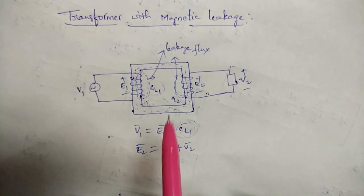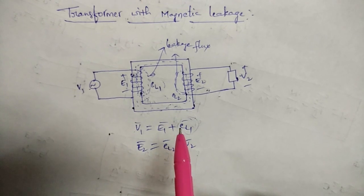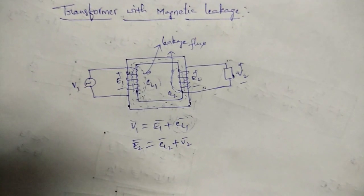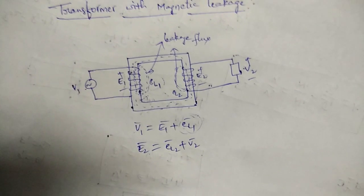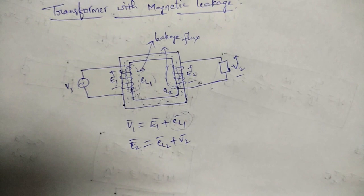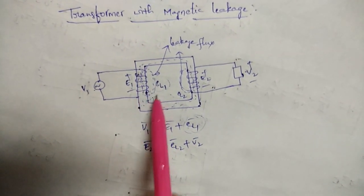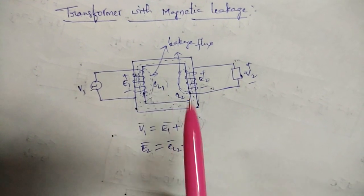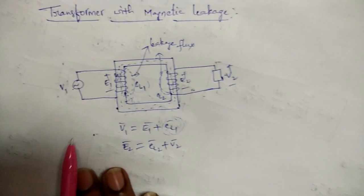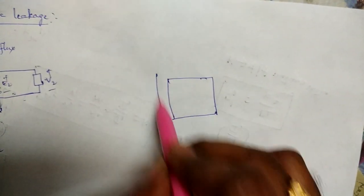This magnetic leakage can be modeled as an inductance. You may ask why it is not modeled as a resistance — because in a resistance there will be some loss, but here there is no loss, only a voltage drop is present. So we can model it only as an inductance. Therefore, the transformer with magnetic leakage can be represented with an inductance.